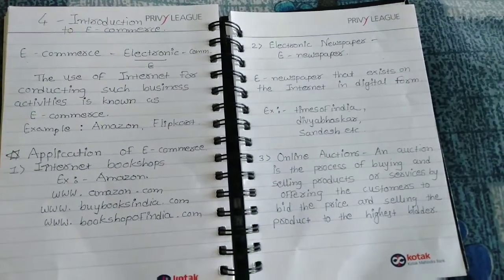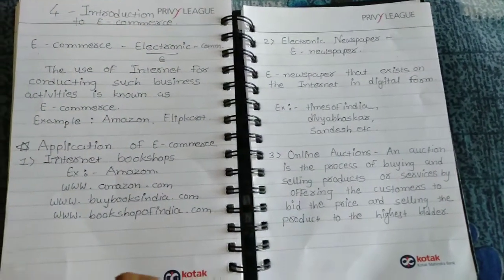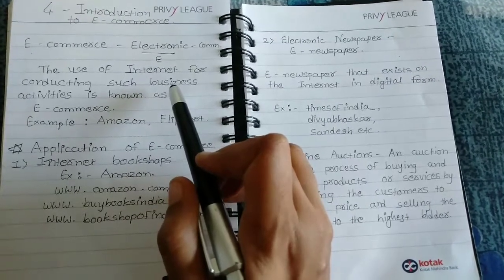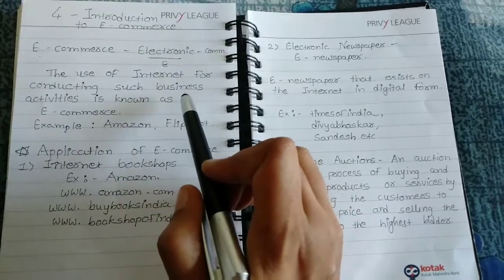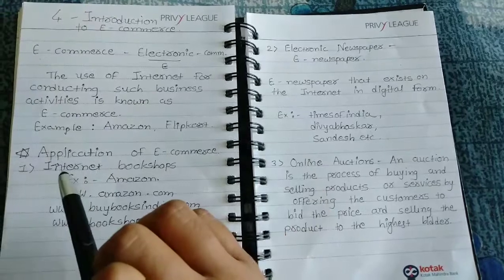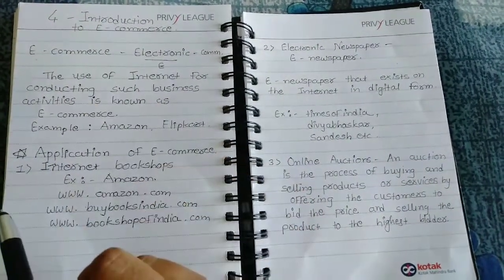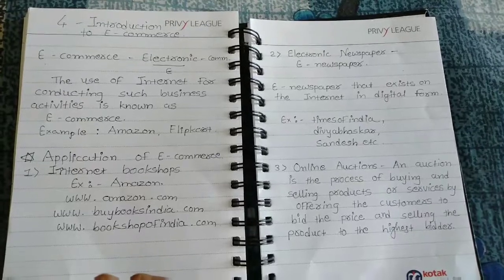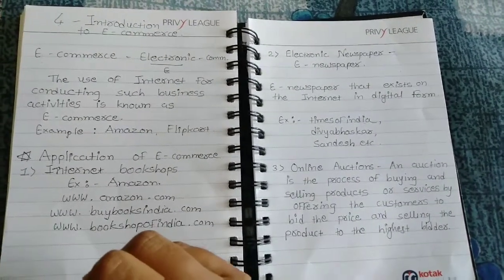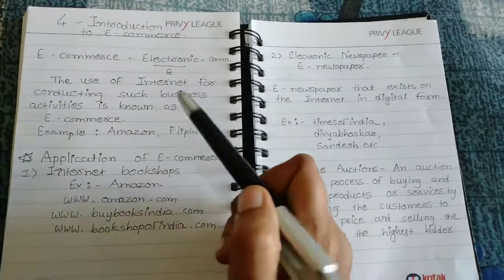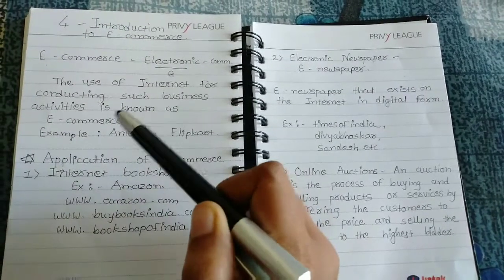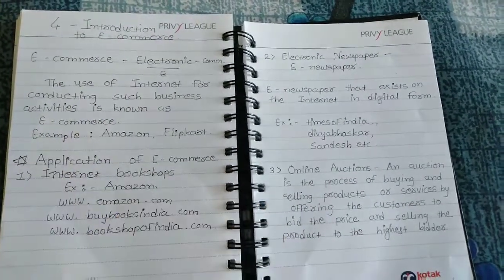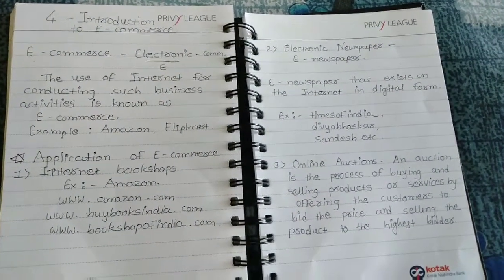For example, if you want to make your business online then you have to make a website for it. You have to do business activity — if you want to sell your products online, if you want to attract customers towards your website more and more, then you have to do business activity online, and it is known as e-commerce. In short, if you want to do business online then it is known as e-commerce.